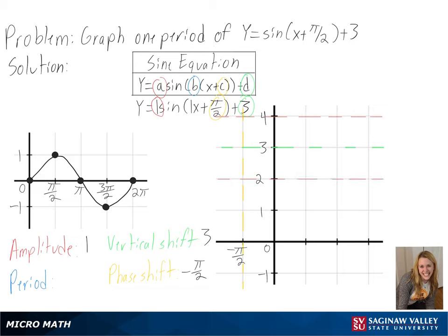Then we can solve for our period, or our 2 pi over b. We can see here our b is 1, so we will get 2 pi as our period.